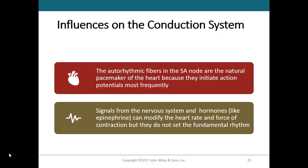On their own, the auto rhythmic fibers in the SA node would initiate an action potential about 100 times a minute. The SA node sets the rhythm for contraction of the heart — in other words, it's the natural pacemaker. Its rate is faster than any of the other auto rhythmic fibers. Because it's faster, it sets the pace for how fast an action potential spreads through the conduction system, and all of the other fibers can generate their own action potential at a slower rate.